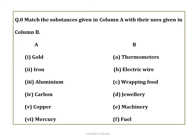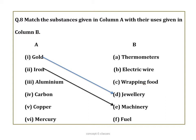Question number eight: match the substances in column A with their uses in column B. Gold is used for making jewellery. Iron is used for machinery. Aluminium is used for wrapping food. Carbon (coal/gas) is used as a fuel. Copper is used for making electric wires. Mercury is found in thermometers.